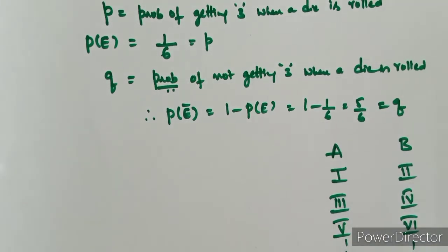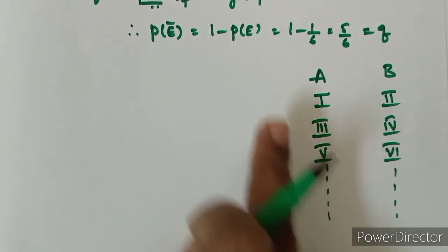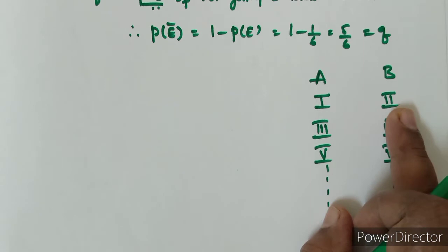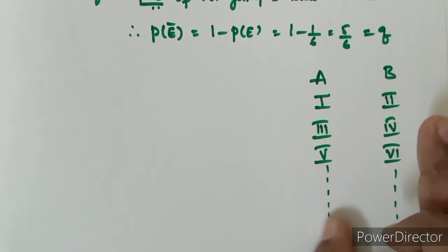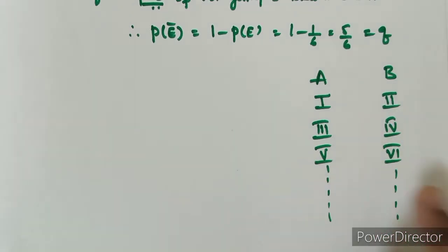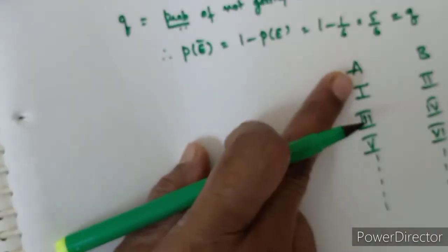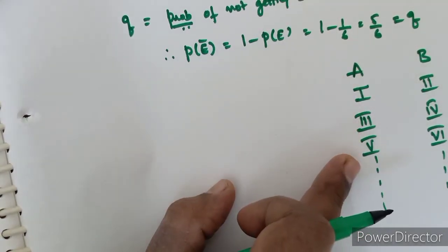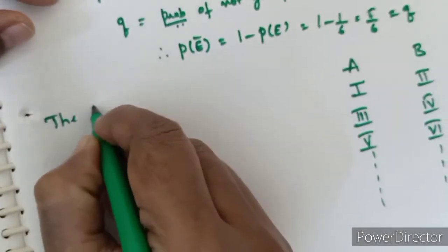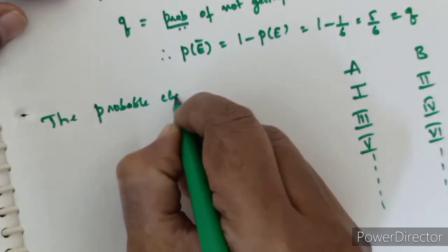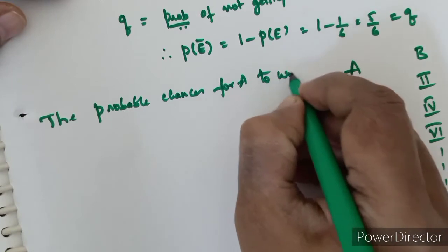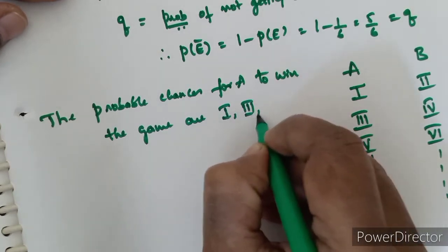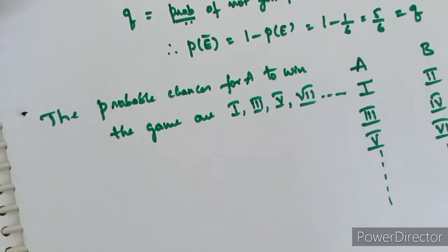If no one gets 3, the game continues. The probable chances for A to win the game are: first chance, third chance, fifth chance, seventh chance, ninth chance — like that, up to infinity. These are the chances for A to win the game.